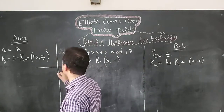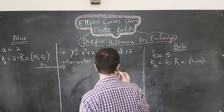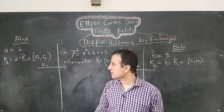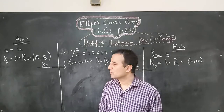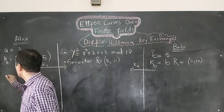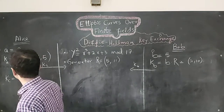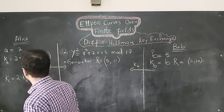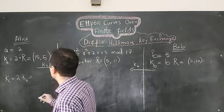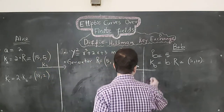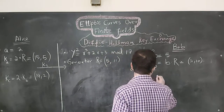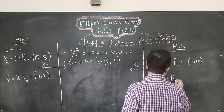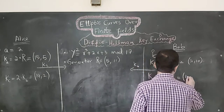Alice and Bob broadcast their respective public keys. Based on the public key received from each other, they compute their common private key. Alice computes KC = A·KB = 2·(2,10) = (14, 2) using the double-and-add algorithm. Similarly, Bob computes KC = B·KA = 5·(15,5) = (14, 2). The answers match, confirming they share the same common private key.